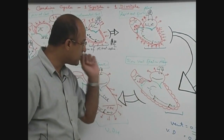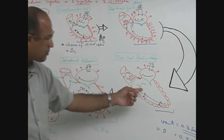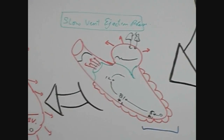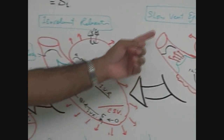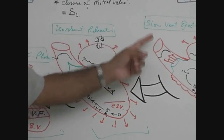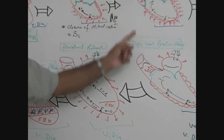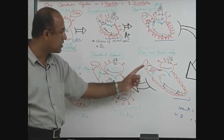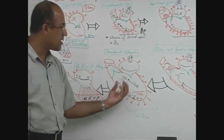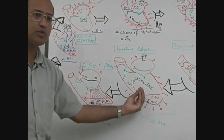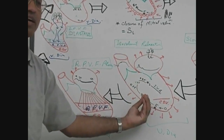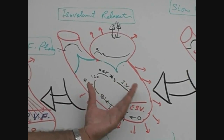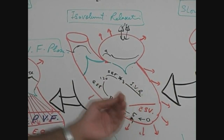In the next stage — the rapid ejection phase — there is no sound. In the slow ejection phase also, there is no sound. Both the rapid and slow ejection phases produce no sound. Then left ventricular diastole starts as the left ventricle begins relaxing.